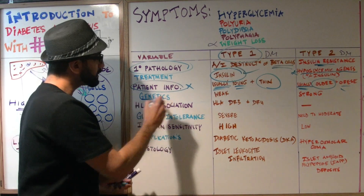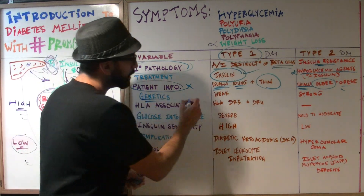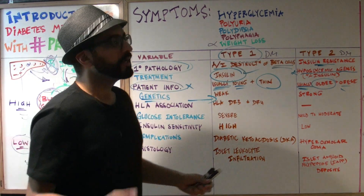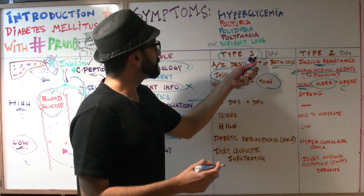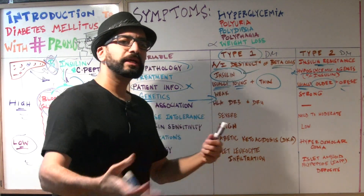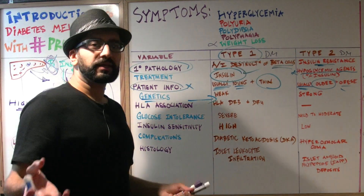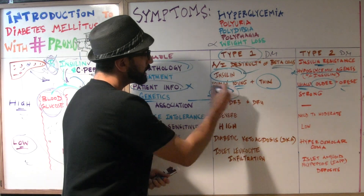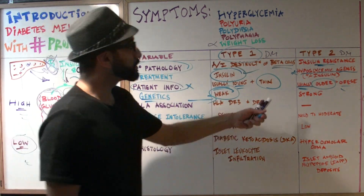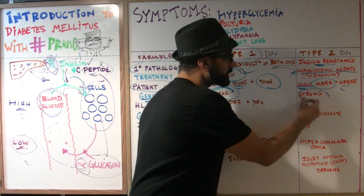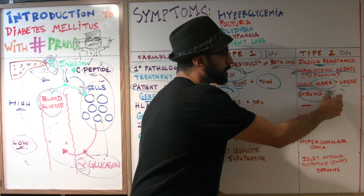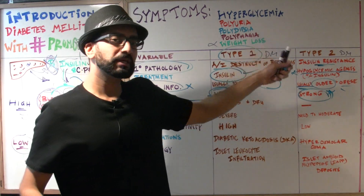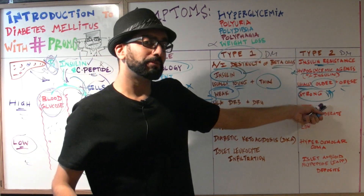Genetics: if a family member has type 1 diabetes, will the son or daughter get type 1 diabetes? The genetic link for type 1 diabetes is very weak. However, for type 2 diabetes, the genetic link is very strong. So family history is very important when thinking about type 2 diabetes.